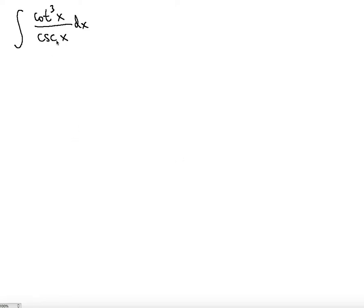To find the antiderivative of cotangent cubed divided by cosecant, first what you want to do is rewrite the numerator. The first thing is to split cotangent cubed as cotangent squared.